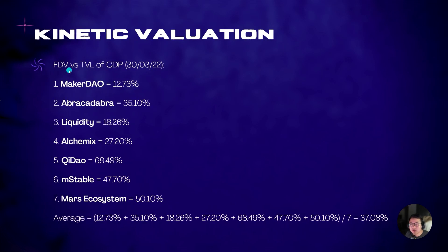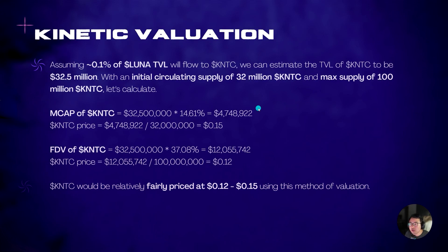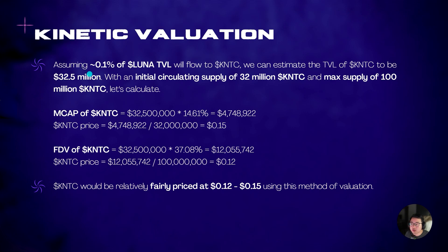If we take a look at the FDV versus TVL of the CDPs, we also get an average of about 37%. If we use that and assume that about 0.1% of LUNA TVL flows into KNTC, we can estimate that's about 32.5 million. So with an initial circulating supply of 32 million KNTC, we get an estimated KNTC price of 12 to 15 cents using this method.